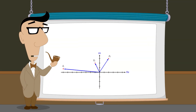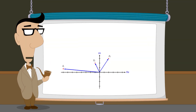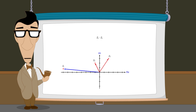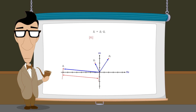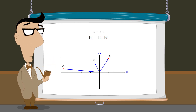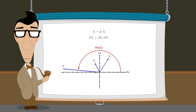So when we multiply two complex numbers z2 and z3, producing the product z1, the modulus of z1 will be equal to the product of the moduli of z2 and z3, and the argument of z1 will be equal to the sum of the arguments of z2 and z3.